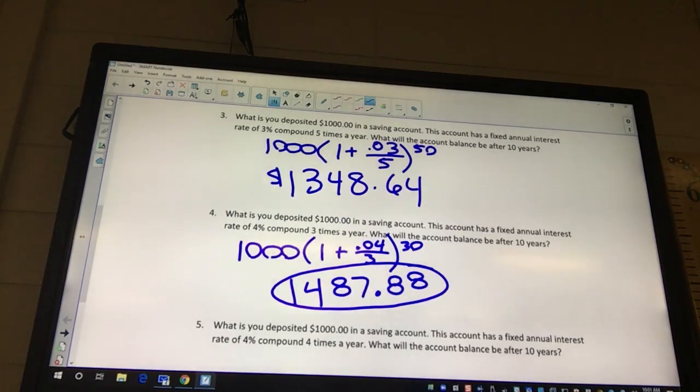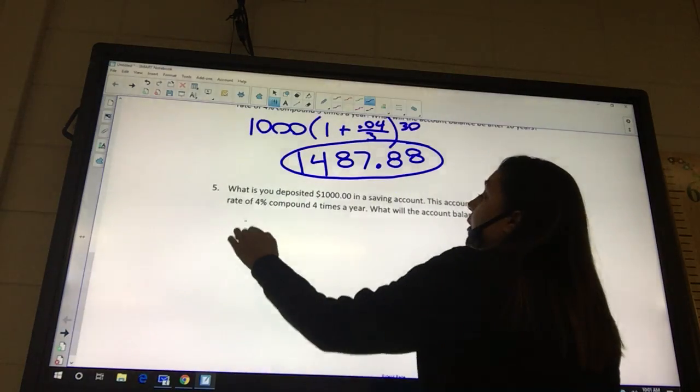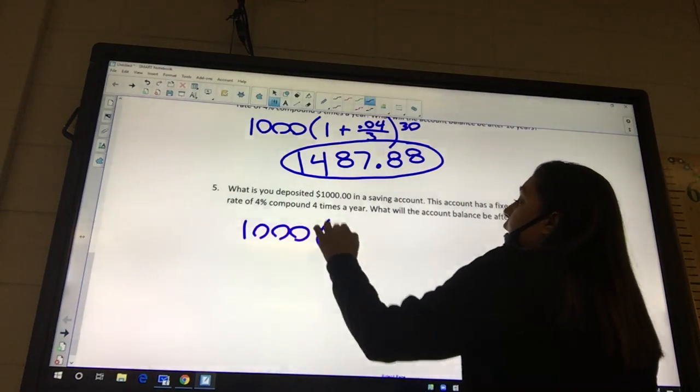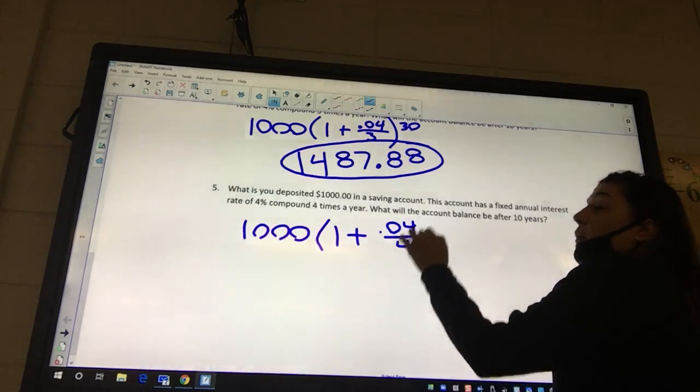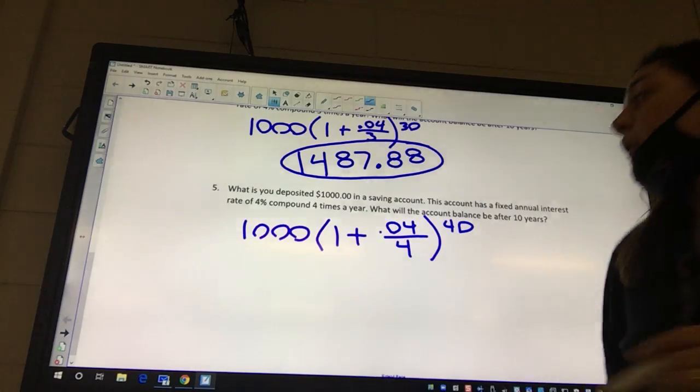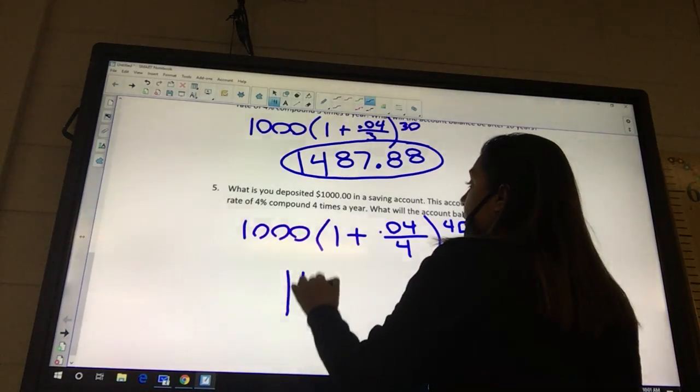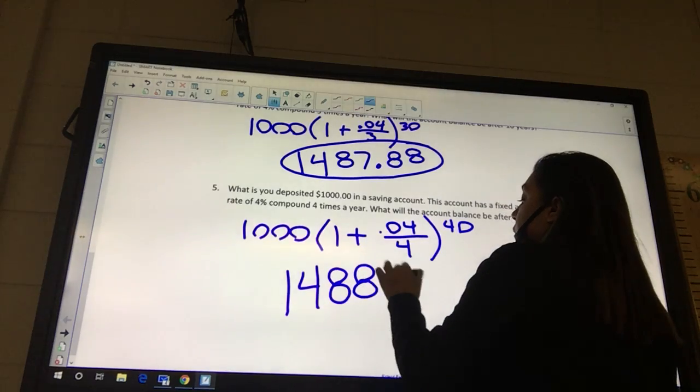Okay, look at problem 5. So we have $1000. We have 1 plus my rate is 4% over 4, and it's going to be for 40 years. $1488.86.